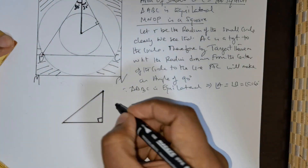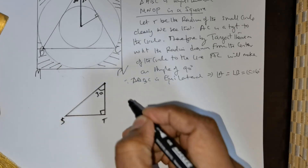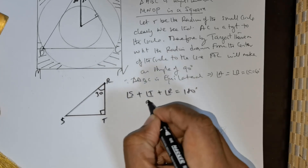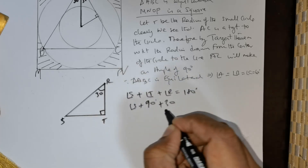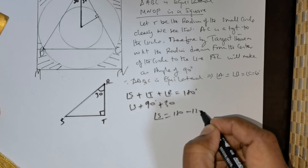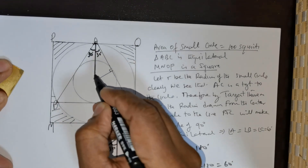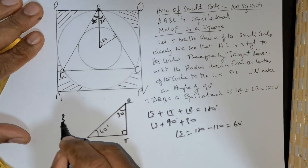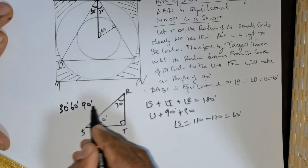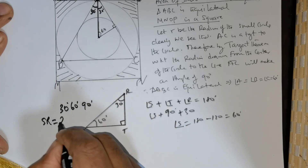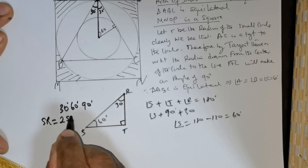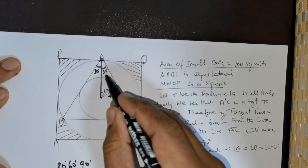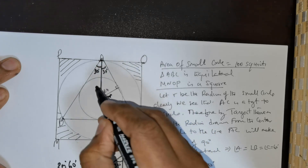Let's call this triangle STR. Angle S plus angle T plus angle R equals 180 degrees. Angle T is 90, angle R is 30, so angle S equals 180 minus 120 which equals 60 degrees. In a 30-60-90 degree triangle, the longest side SR equals two times the smallest side ST. The radius R is the smaller side, so the longest side is two times R.